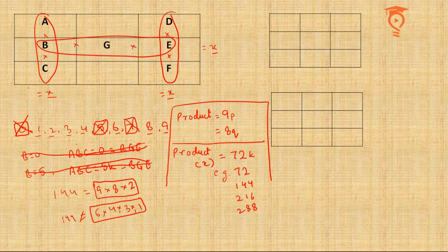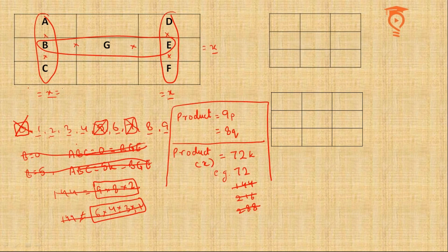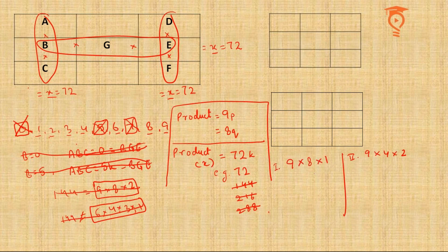Last bit of technicalities we have to take care of. So 72 can be made by 9 times 8. Either you multiply 8 into 1 or you multiply 4 into 2. Let's take them as Case 1 and Case 2.